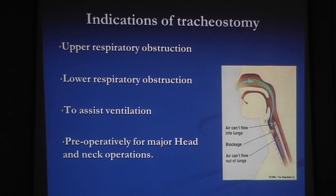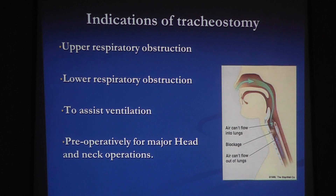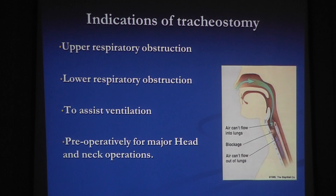The indications of tracheostomy fall into four major groups. The first and most frequent group is upper respiratory tract obstruction. We have hundreds of causes which can be classified anatomically — causes in the nasopharynx, oropharynx, larynx, upper trachea, hypopharynx, and causes outside the larynx causing compression. We can also classify them into congenital, traumatic, inflammatory, neoplastic, and so on.